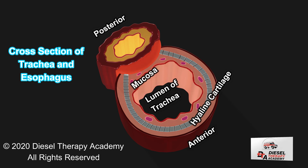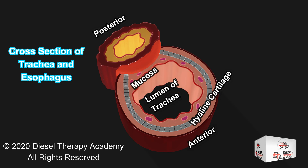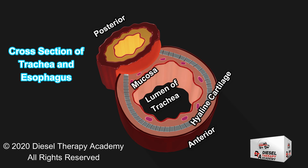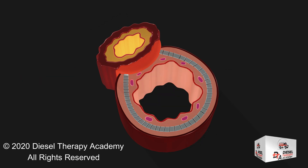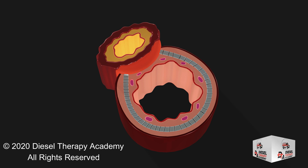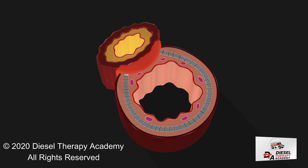The mucous membrane that lines the trachea is ciliated pseudostratified columnar epithelium, similar to that in the nasal cavity and nasopharynx. Goblet cells produce mucus that traps airborne particles and microorganisms, and the cilia propel the mucus upward, where it is either swallowed or expelled.